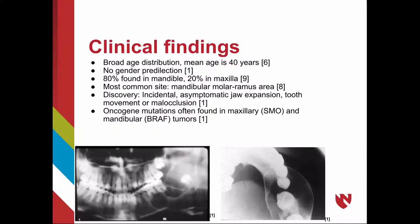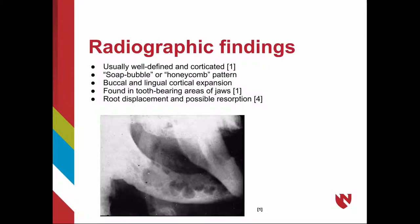Oncogene mutations are often found in maxillary SMO or mandibular BRAF tumors. Radiographically, it is usually well-defined and corticated, with a soap bubble or honeycomb pattern. Buccal and lingual cortical expansion can be found, and it occurs in tooth-bearing areas of the jaw. Root displacement and possible resorption can also be seen.